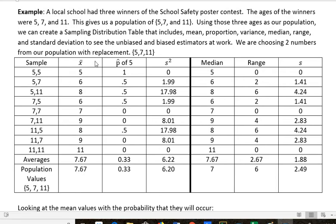The first thing I did was compute the mean for each sample. The mean for 5 and 5 is 5, for 5 and 7 is 6, 5 and 11 is 8, and so forth. The average of all 9 samples of n = 2 was 7.67. And if I find the mean of the population — 5, 7, 11 — I would also find that to be 7.67.